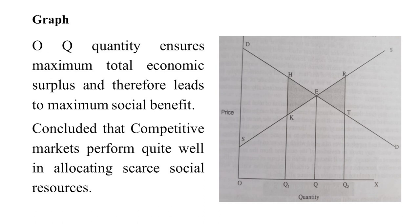When we reduce the quantity from OQ to OQ1, there is a loss for the producer surplus, shown by the shaded area. At that point, demand is high and supply is lower. When we increase the quantity beyond OQ, supply is more and demand is less. So in both cases — reducing or increasing the quantity supplied or purchased from the equilibrium — producers lose the surplus they would otherwise gain.